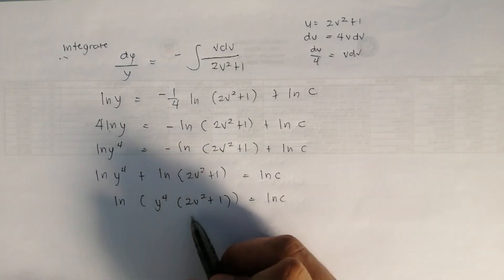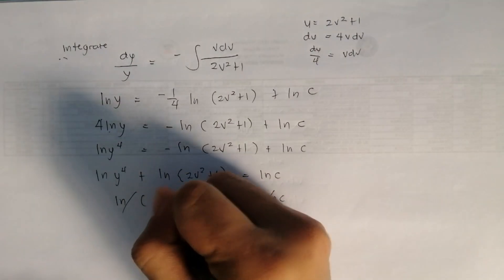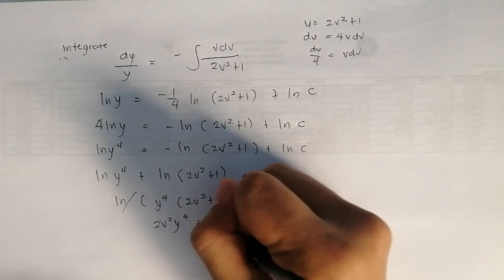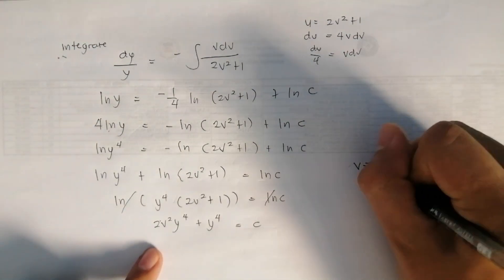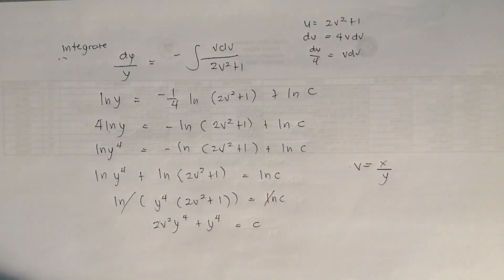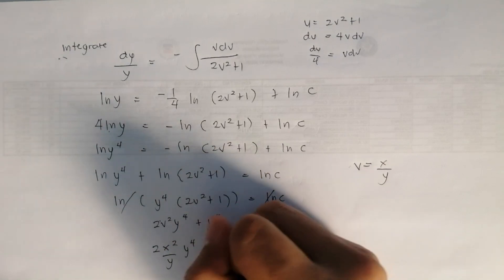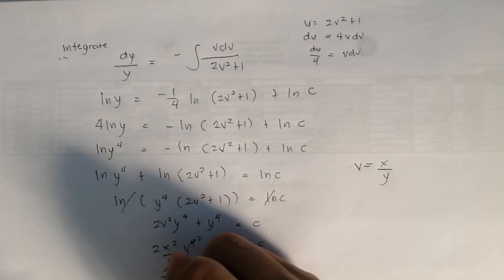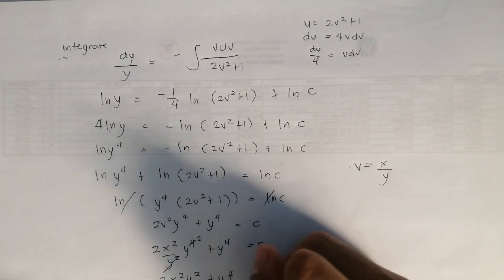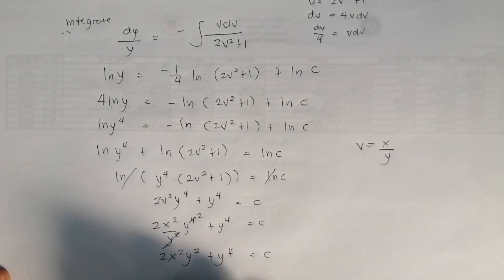Cancelling ln from both sides: y⁴(2v² plus 1) equals c, which expands to 2v²y⁴ plus y⁴ equals c. Substituting back v equals x over y: 2(x²/y²)y⁴ plus y⁴ equals c. Cancelling y²: 2x²y² plus y⁴ equals c. That is your final answer.